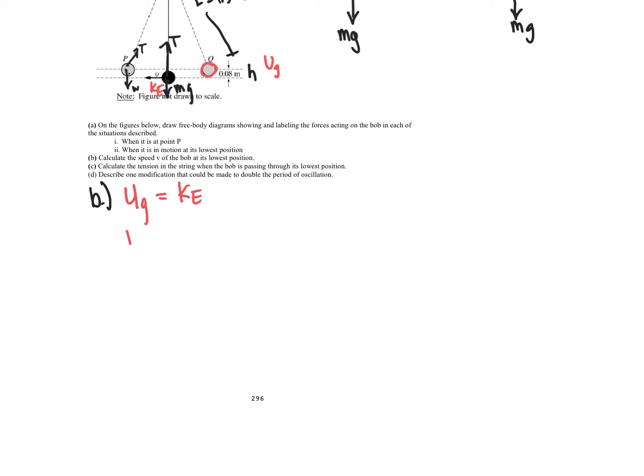And then we can solve for the velocity of the bob at its lowest spot. So we know potential energy is MGH. Kinetic energy is MV squared over 2. We can see some things cancel out. Solving for V, we get the square root of 2GH equals V. So that's the velocity at the bottom.